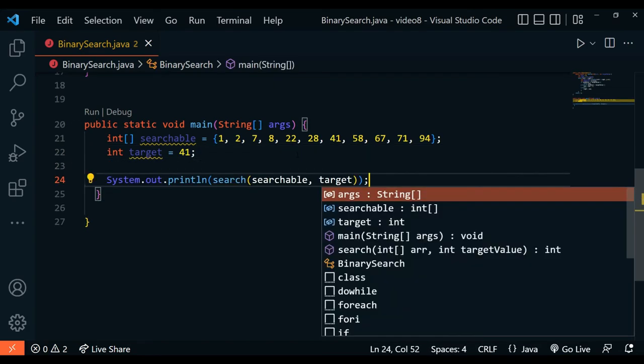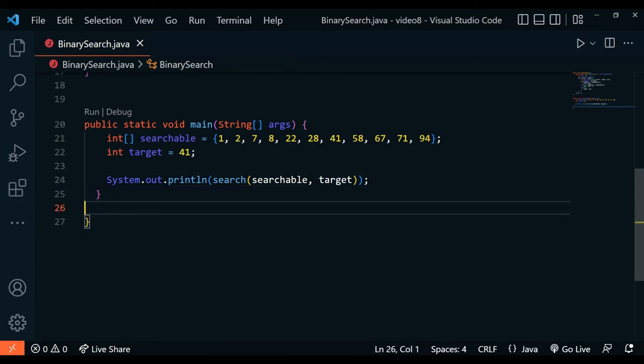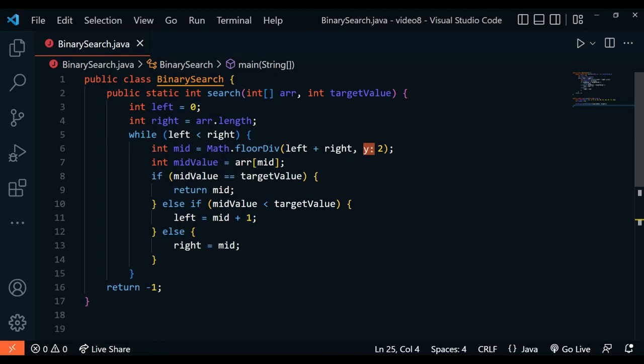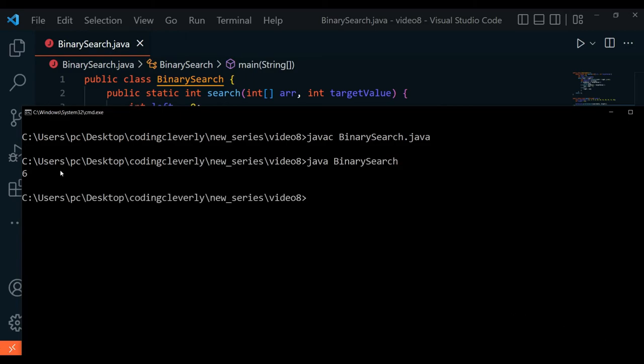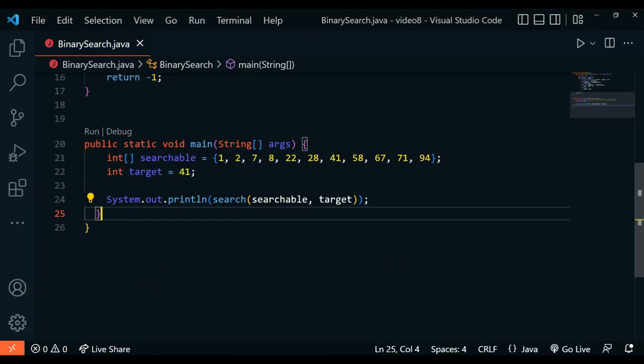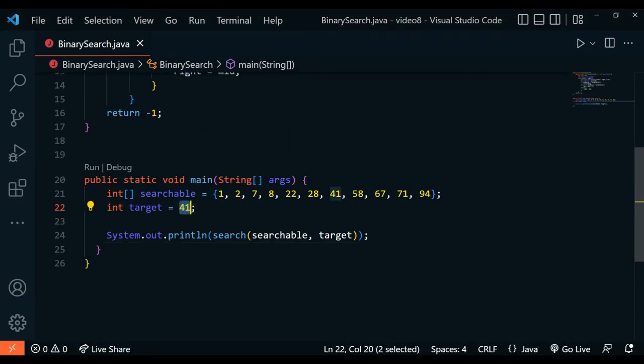Now that we're done with this, we can save this code and start running it. javac BinarySearch, and then we simply write java BinarySearch, which is the class file. You can see that it results in 6. The number that we were looking for was 41, and it's saying that it's in the sixth index: 0, 1, 2, 3, 4, 5, 6. Perfect.